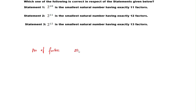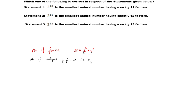Let us take 20. The prime factorization of 20 is nothing but 4 times 5, so 2 squared times 5 to the power of 1. Now observe the prime factorization of 20. Tell me the number of unique prime factors. So we have here 2 and 5, so we have two unique prime factors: 2 and 5.